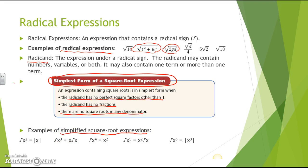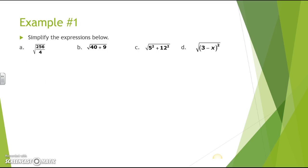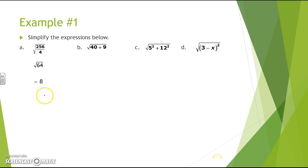We're going to do some examples simplifying these expressions. For part a, we have the square root of 256 over 4. The first step is we just divide: 256 divided by 4 gives me the square root of 64, and the square root of 64 is 8. So that would be my final answer. You do need to show the steps and show your work when solving this in the book work.